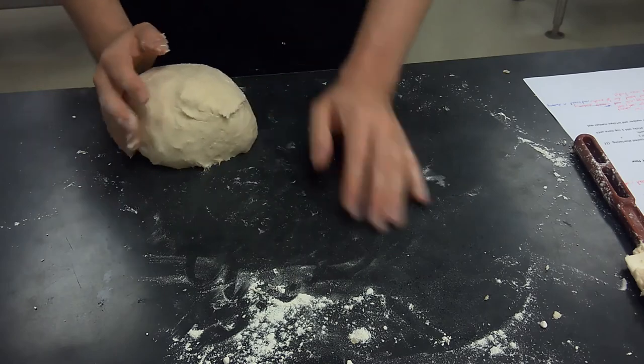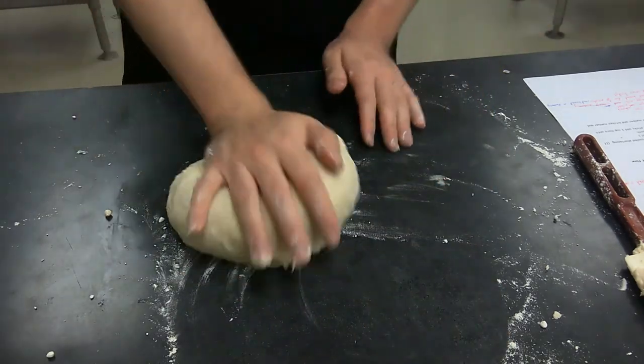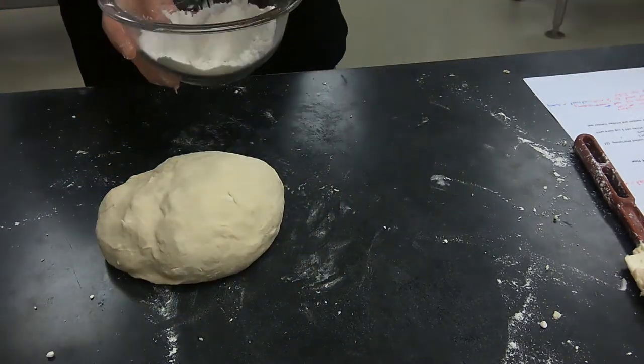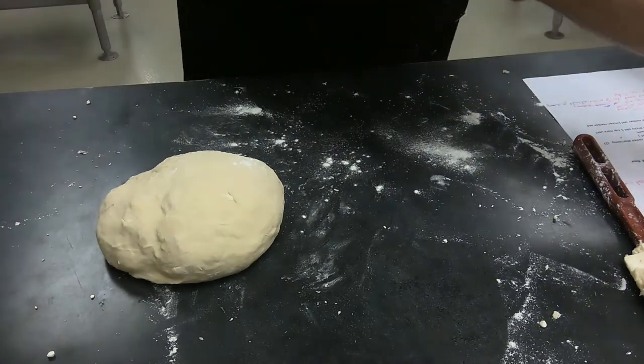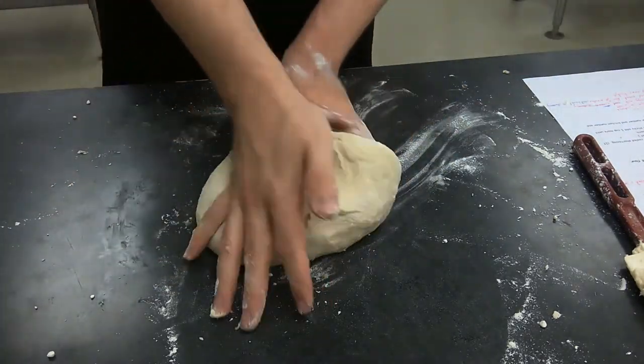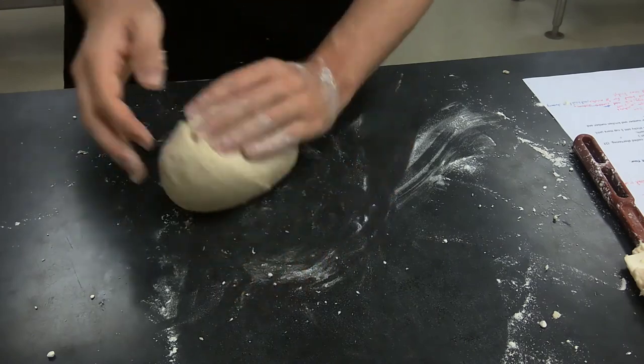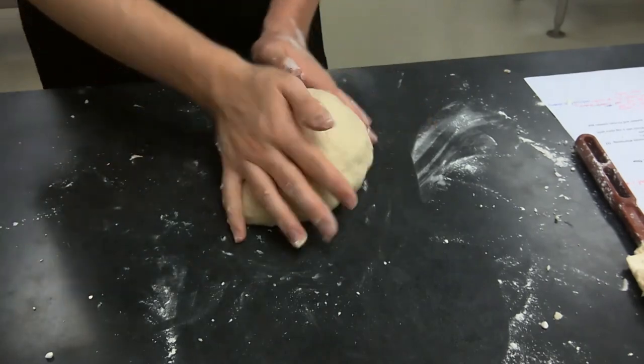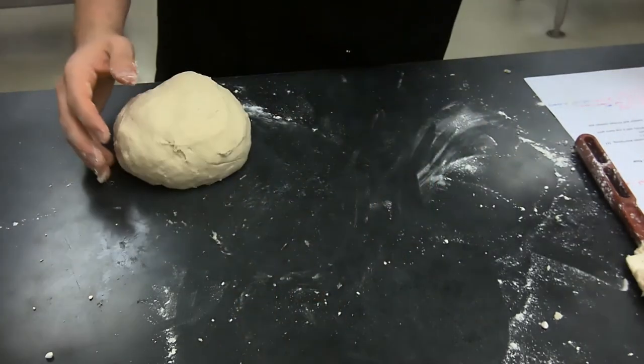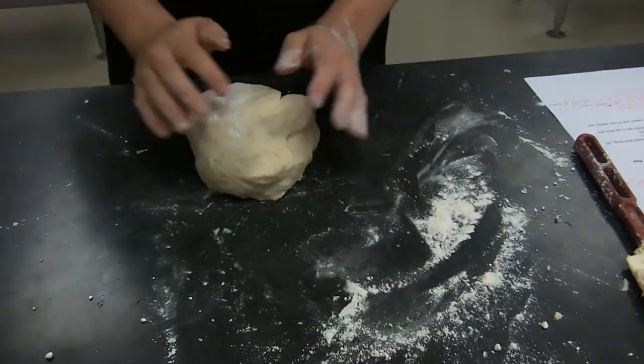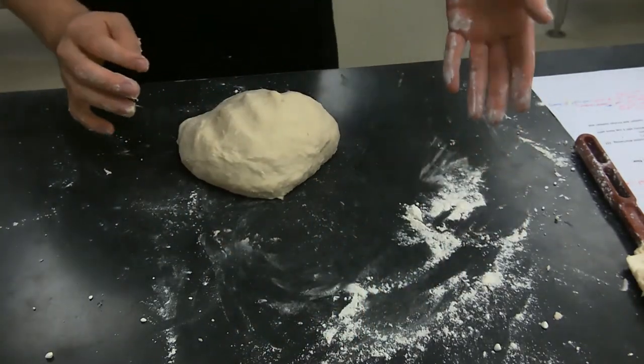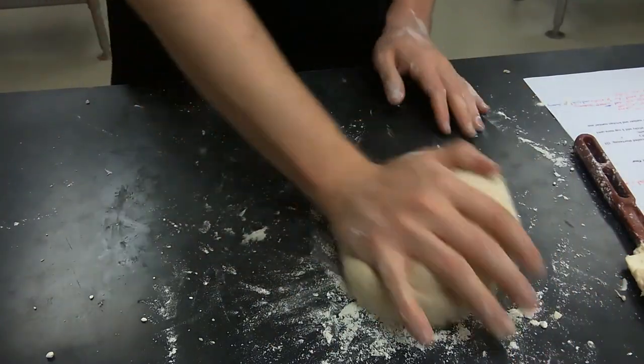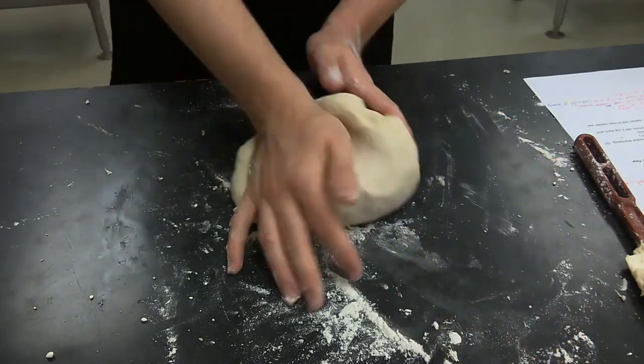Now if the dough starts to get overly sticky, you can dust with a little flour. Don't overdo it with the flour. There's people that just go absolutely crazy and just throw flour all over the place. You don't want that. You want the dough to be a little bit sticky. A little bit is fine. Too much so, and that's not good. So you can see what I'm doing here is I'm just kind of throwing a little bit of flour on my counter, and then when I feel the dough start to get a little sticky, I just kind of run it through and then knead it a couple more times.